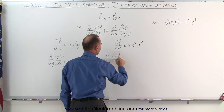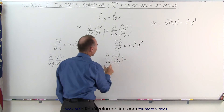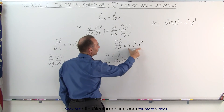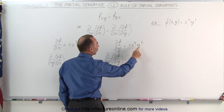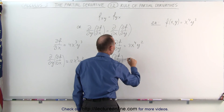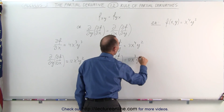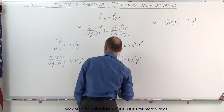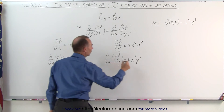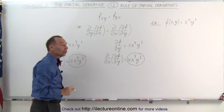So that's the function with respect to y, which means we're going to take the partial derivative of this with respect to x. Now y becomes a constant, this becomes 4 times 3, which is 12x cubed y squared — and notice you get the exact same result. It doesn't matter what the order of operation is.